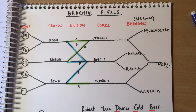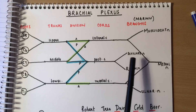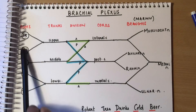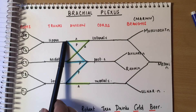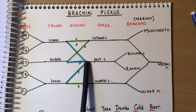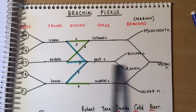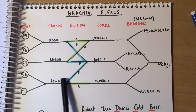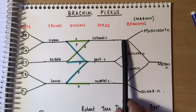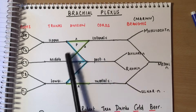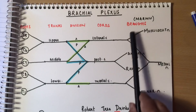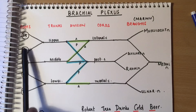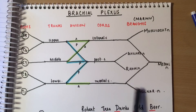With this diagram you can trace where each nerve arises and determine its root value. For example, the axillary nerve comes from C5, C6, and C7, because the posterior divisions of the upper, middle, and lower trunks continue as the axillary and radial nerves. Similarly, the musculocutaneous nerve gets branches from the lateral cord, giving it root values C5, C6, and C7.